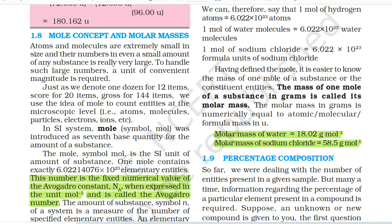Having defined the mole, it is easier to know the mass of one mole of a substance or the constituent entities. The mass of one mole of a substance in grams is called its molar mass. The molar mass in grams is numerically equal to atomic or molecular or formula mass in u. Molar mass of water = 18.02 g/mol. Molar mass of sodium chloride = 58.5 g/mol.